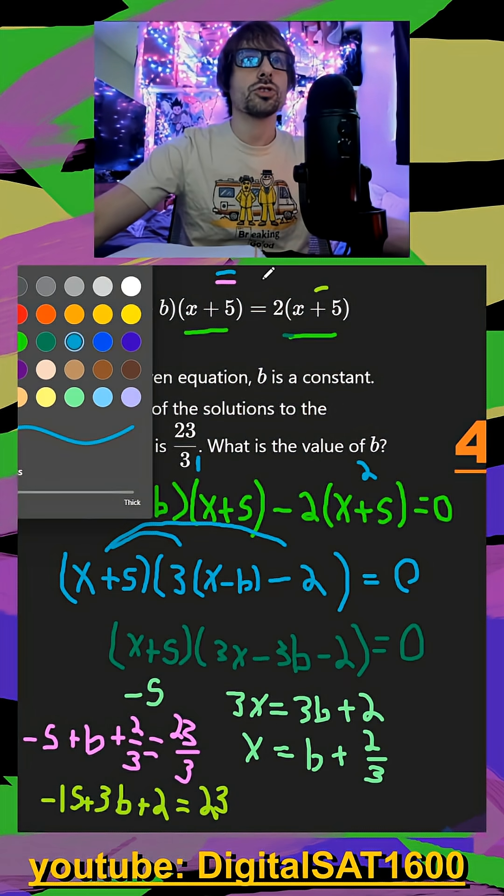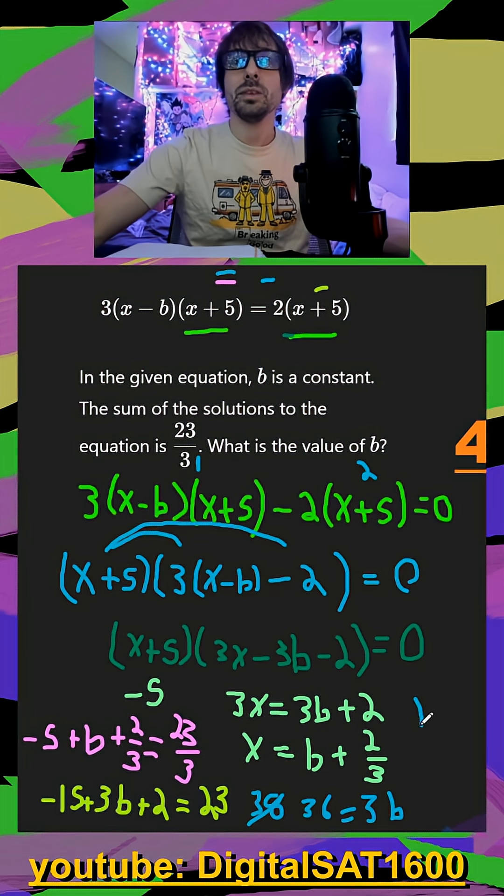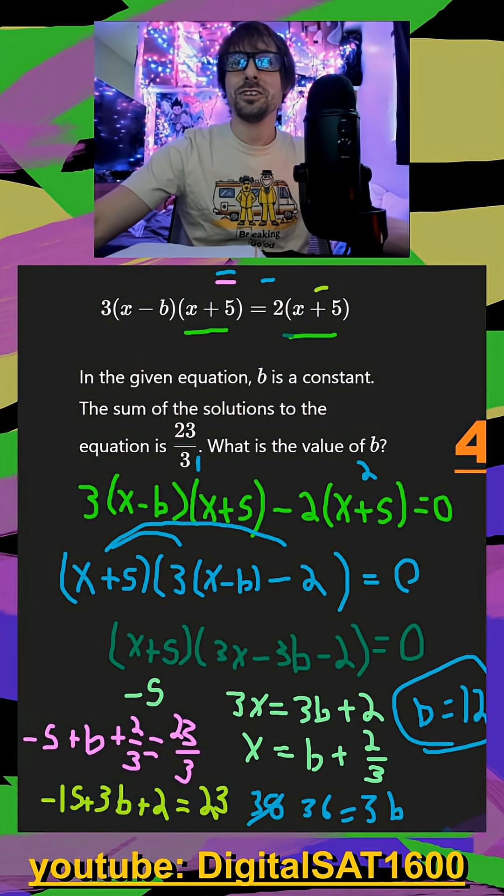I would add 15 to the other side, so we have 38. But then I would subtract two. So we have 36 is equal to three b, or finally, b is equal to 12. That's all you got to do for that one.